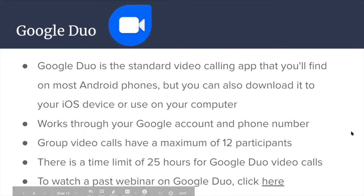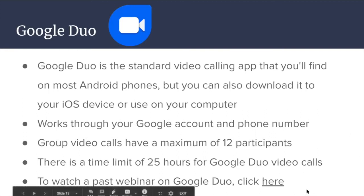Google Duo is the standard video calling app found on most Android phones, but you can also download it to your iOS device or use it on your computer. It works through your Google account and phone number. Group video calls have a maximum of 12 participants and a time limit of 25 hours. You can also watch a past webinar on Google Duo through the link provided.